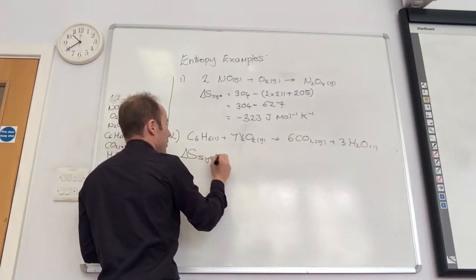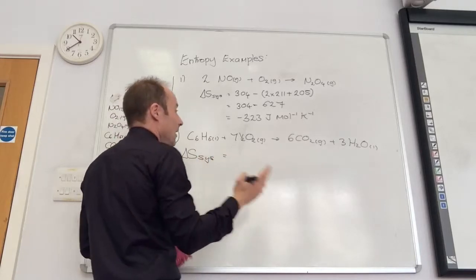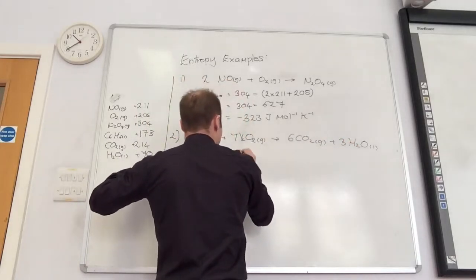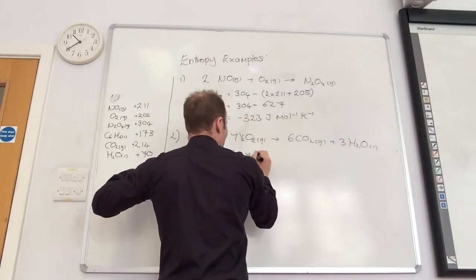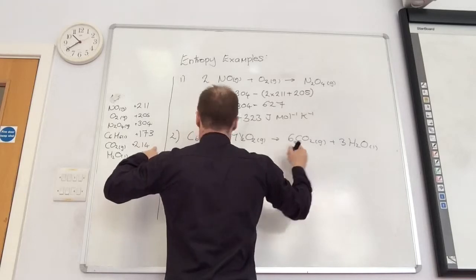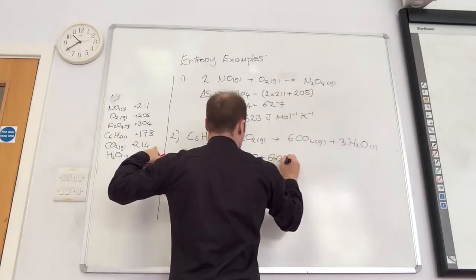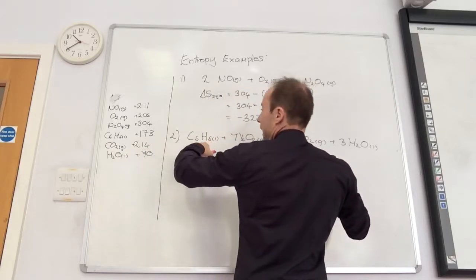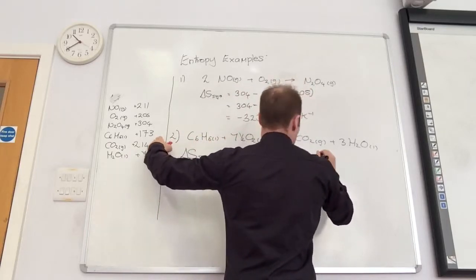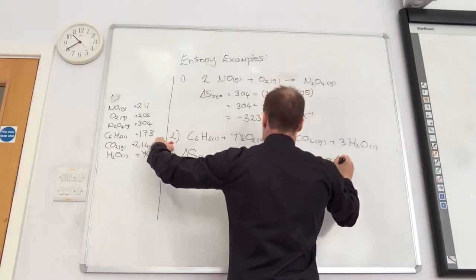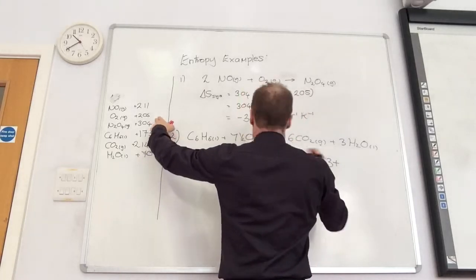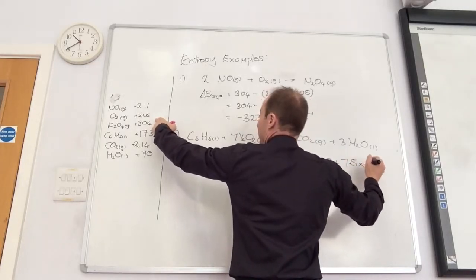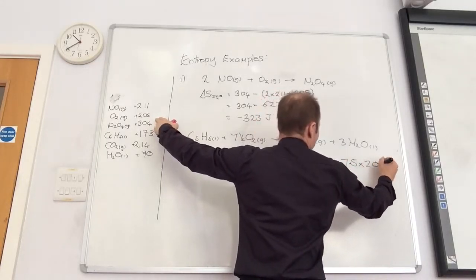Delta S system for this one is slightly more difficult. So I've got water, which is 3 times 70, plus 6 times 240, which is my products, minus benzene, which is 173, plus 7.5 O2's, 7.5 times 205.